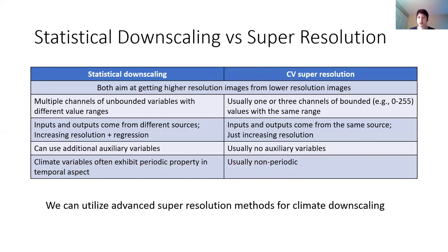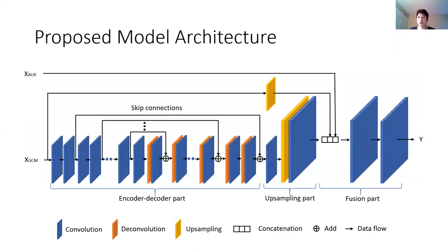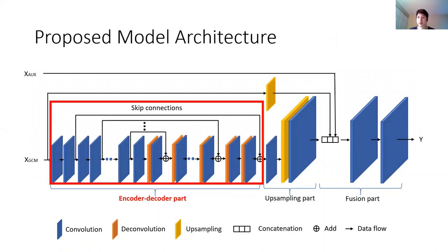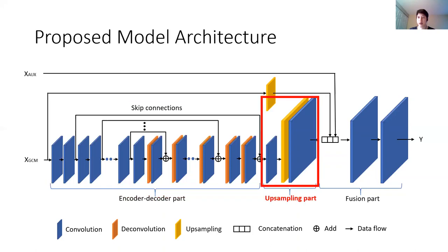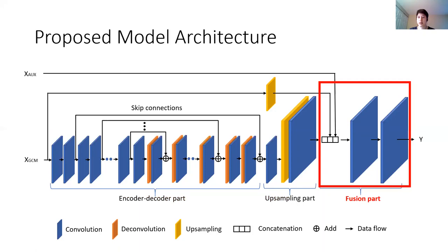Based on the similarities and differences between statistical downscaling and image super-resolution, we proposed a neural network model adapted from a super-resolution method for downscaling to leverage the advanced super-resolution technique. The proposed model architecture Ynet has three parts. The first is the encoder-decoder part, which consists of max-convolutional and deconvolutional layers with skip connections to extract features. The second part is the upsampling part, which consists of interpolation and convolutional layers to avoid checkerboard artifacts. And the last part is the fusion part, which combines the output of the second part and the auxiliary variables to get the final output.